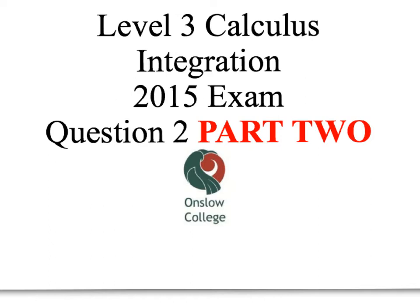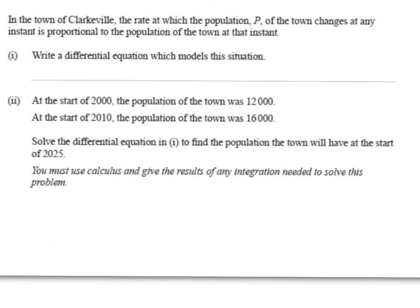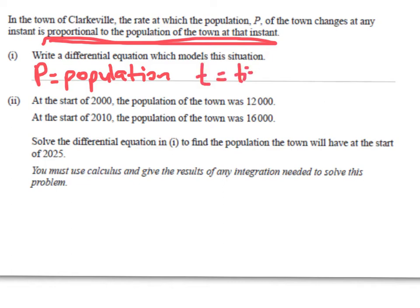The merit question is a differential equation one. In the town of Clarkville, the rate at which the population of the town changes at any instant is proportional to the population of the town at that instant. As soon as you see that question, you should be feeling really happy because this is the classic type of DE that we have practised heaps in class. If we want to write a differential equation that models this situation, we're going to let the population be P, and T is equal to time.